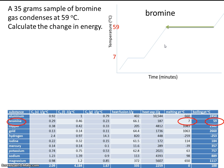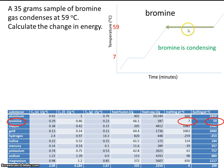In this case, the bromine is going from a gas to a liquid — it's condensing. Anytime we're on a plateau, we have to use the equation Q equals mHF or mHV. Because we're on the vaporization plateau, we'll use Q equals mHV, where HV is the heat of vaporization.